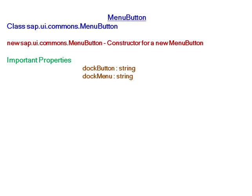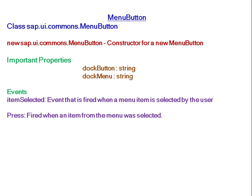Important properties are docButton and docMenu. Events include itemSelected, which is fired when a menu item is selected by the user, and press, fired when an item from the menu was selected. All settings applicable to the base type sap.ui.commons.Button can be used as well.